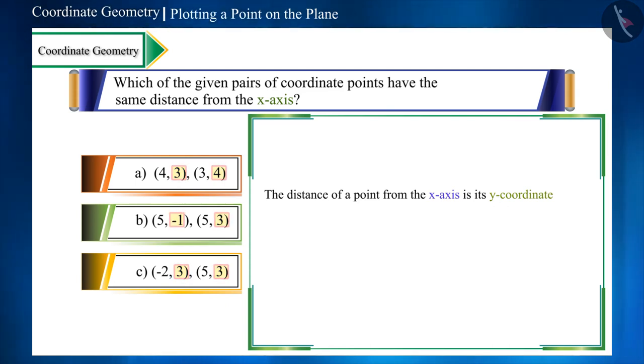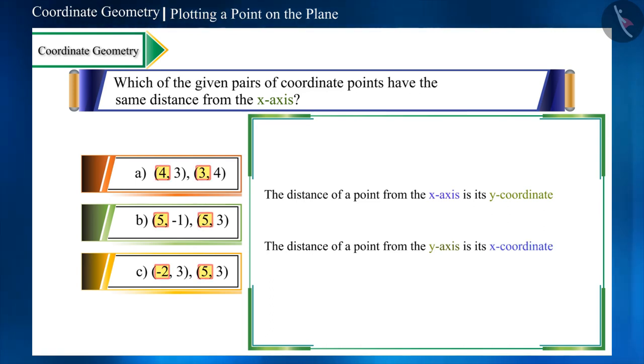Similarly, the distance of a point from the Y-axis is its X-coordinate. That is, the pair whose X-coordinates are the same will be at the same distance from the Y-axis.